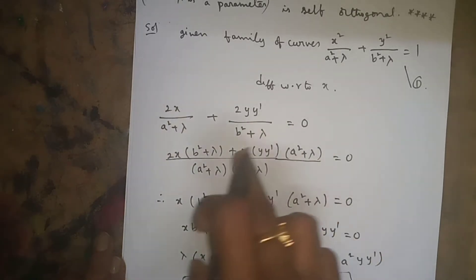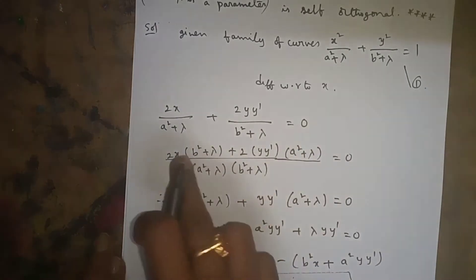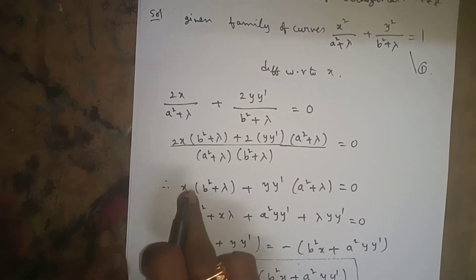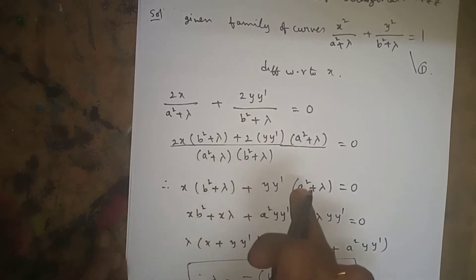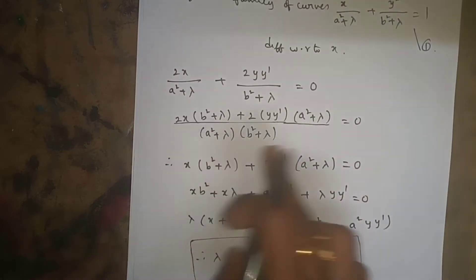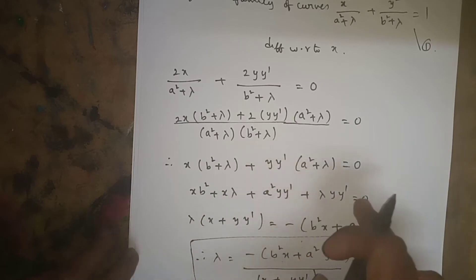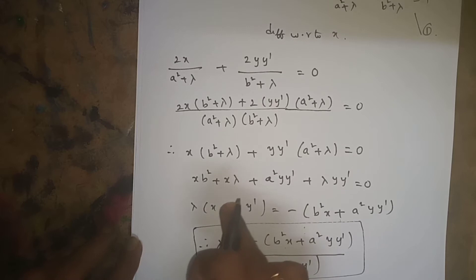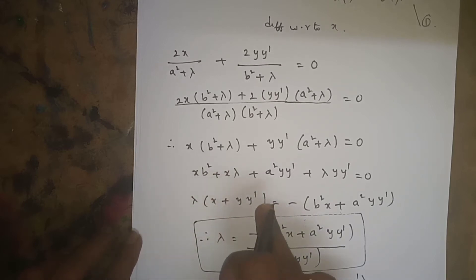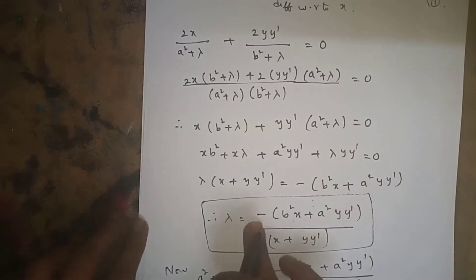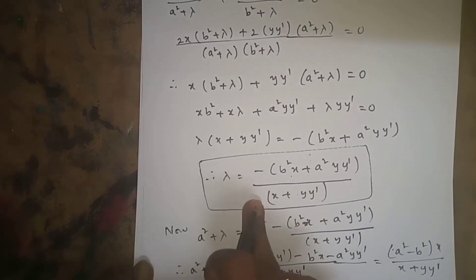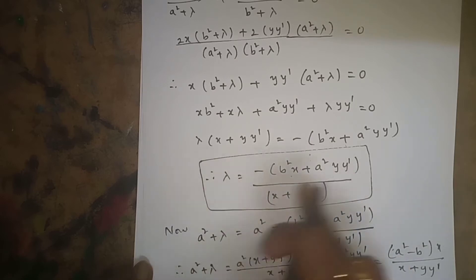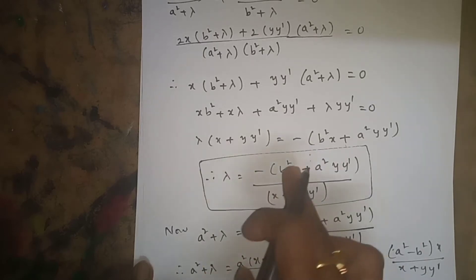Finding the LCM (a²+λ)(b²+λ), cross multiplying and dividing by 2, we get x(b²+λ) + y·y'(a²+λ) = 0. Expanding and taking λ common, we solve to get λ = -(b²x + a²y·y')/(x + y·y'). This is the value of λ.